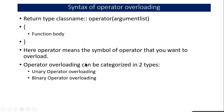Operator overloading is generally categorized into two types: unary and binary. Unary operator overloading involves operators that need only one operand, like increment (++), decrement (--), unary plus, and unary minus. Binary operator overloading involves comparing two values, finding the greater of two values, summing or subtracting two values — these need two operands for calculations.